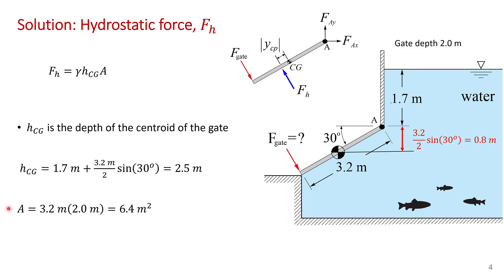The area of the gate is simple, it's 3.2 meters long and you're told in the problem statement that the gate is 2 meters into the page so 6.4 square meters. We can now calculate the hydrostatic force which is the specific weight of the water hcg times area. Of course the specific weight of the water is the density of the water times g. So 998 kilograms per cubic meter times 9.81 meters per second squared. The depth of the centroid we just calculated was 2.5 meters and the area of the gate is 6.4 meters squared.